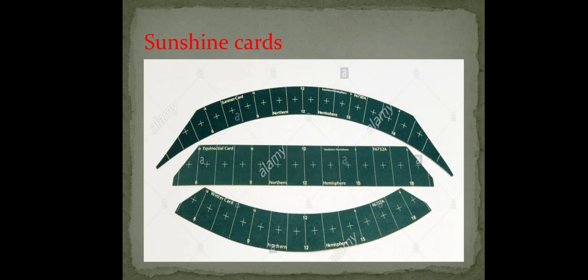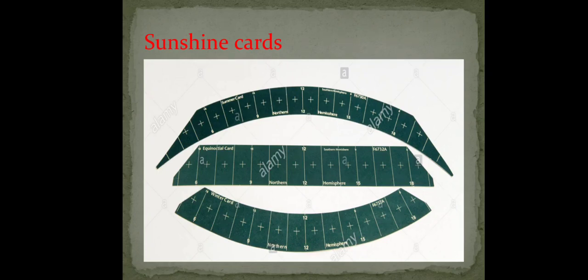There is one more feature by which you can easily identify: the placement of the 'Northern Hemisphere' label. On the long curve card, 'Northern Hemisphere' is written on the concave side, whereas on the short curve card it is written on the convex side. By this feature alone you will be able to identify the long curve and short curve cards — this may be tested in practical examinations. The straight card you will easily identify because it looks straight.